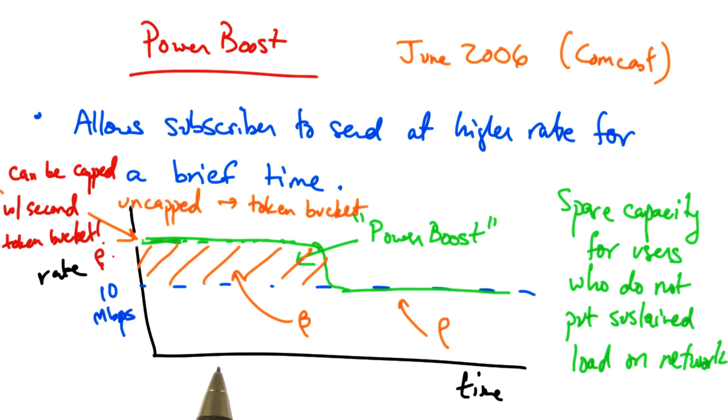That token bucket limits the peak sending rate for PowerBoost eligible packets to the rate row c, where row c is larger than row. Remember that this value of row also affects how quickly tokens can refill in the bucket, so it also plays a role in the maximum rate that can be sustained during a PowerBoost window.